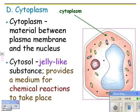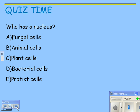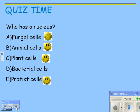The cytosol is the jelly-like substance — the goop — and it provides a medium for chemical reactions to take place. If you didn't have goop, there would just be organelles sitting on the bottom with nowhere for chemical reactions to occur. Who has a nucleus? Everybody has a nucleus except bacteria — so fungi, animal cells, plant cells, and protist cells all have a nucleus.